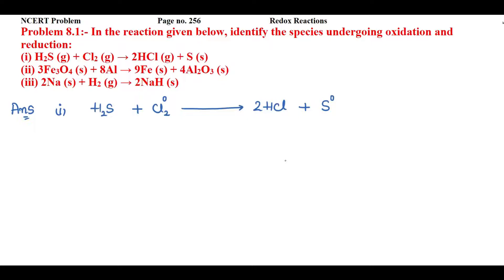Now I'll find the oxidation state of sulfur in H₂S. The electronegativity of hydrogen is less than sulfur, so hydrogen will have its oxidation state as +1. There are two atoms of hydrogen, so +1 × 2 + x = 0. Solving: 2 + x = 0, so x = -2. The oxidation state of sulfur in H₂S is -2.